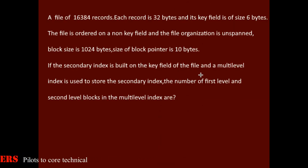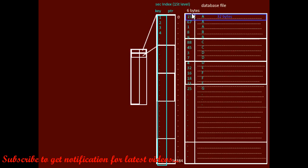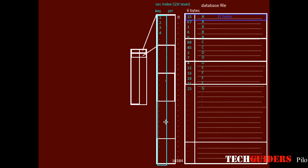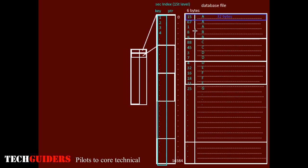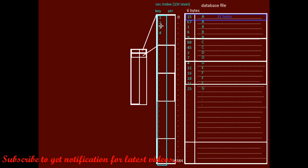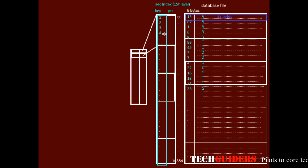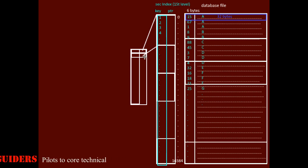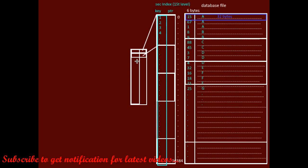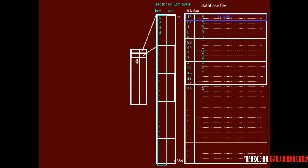The multi-level index is built on the secondary index. Every index will be ordered on its key field. Since we have a secondary index on the key field, this key will be unique for every index record. Thus, it is possible to build a primary sparse index using the block anchor method for the secondary index, and hence we can get the benefit of multi-level indexing.